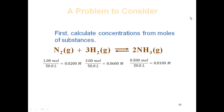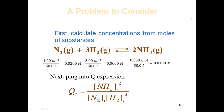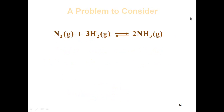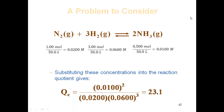Now we solve for Q, set up just like K: concentration of NH₃ squared, divided by concentration of N₂ times concentration of H₂ cubed — but these are all initial values, so this is a Q expression. Plugging in the values: (0.01)² divided by (0.02) times (0.06)³ gives Q = 23.1.